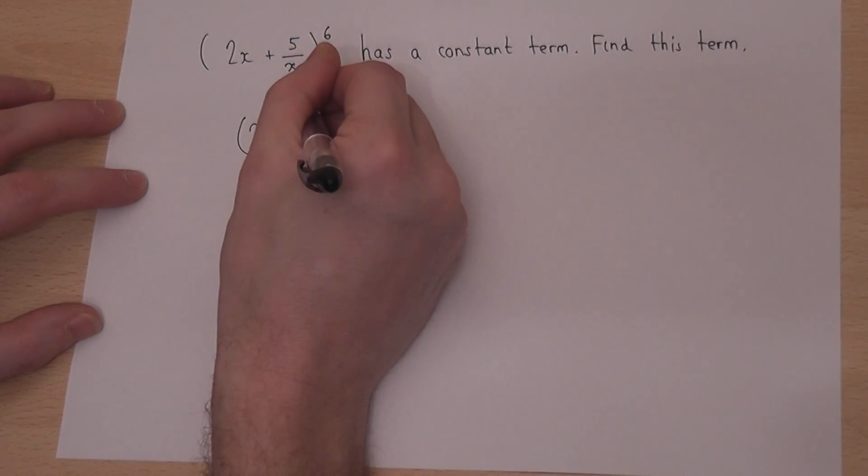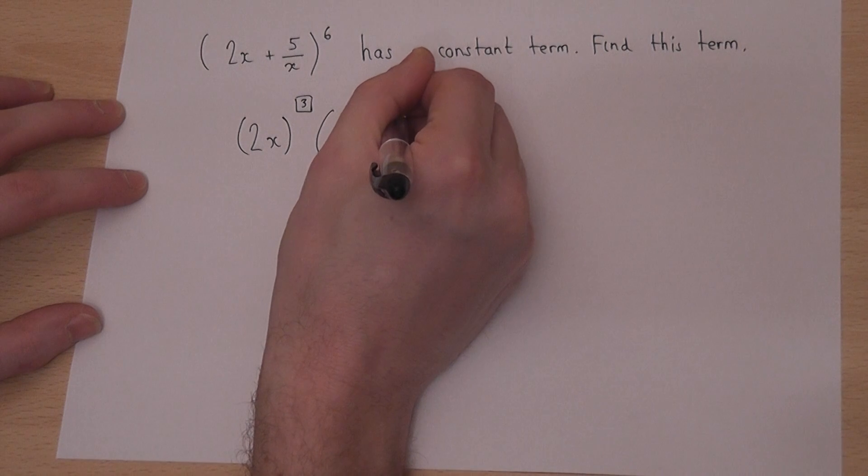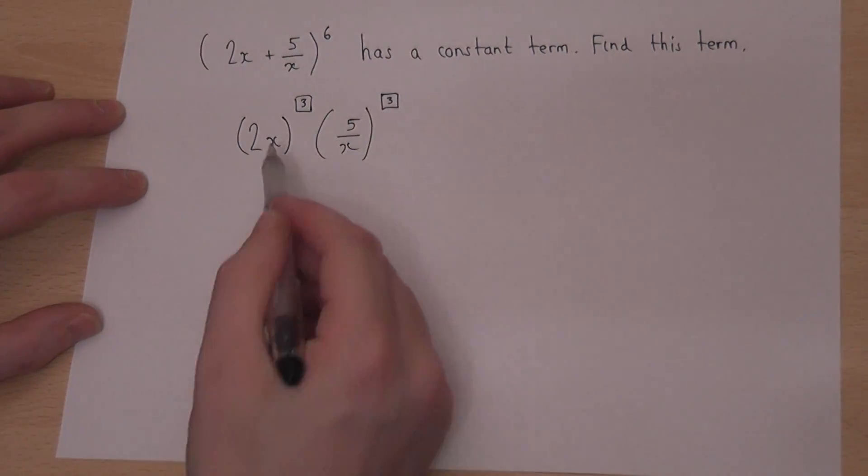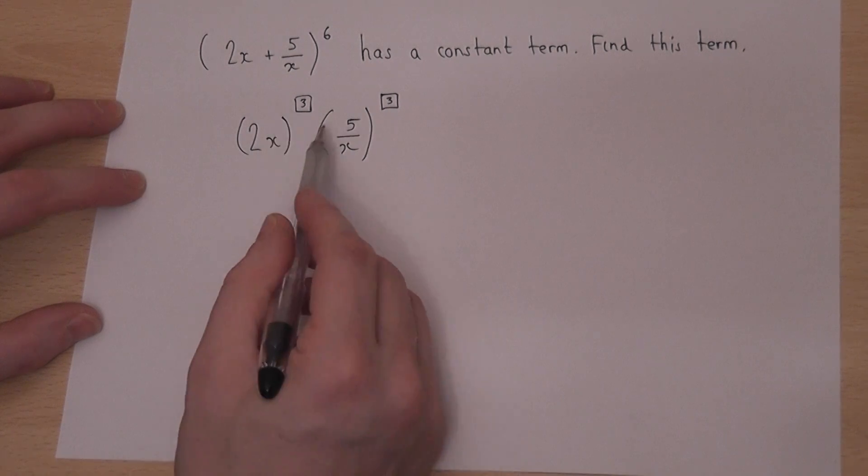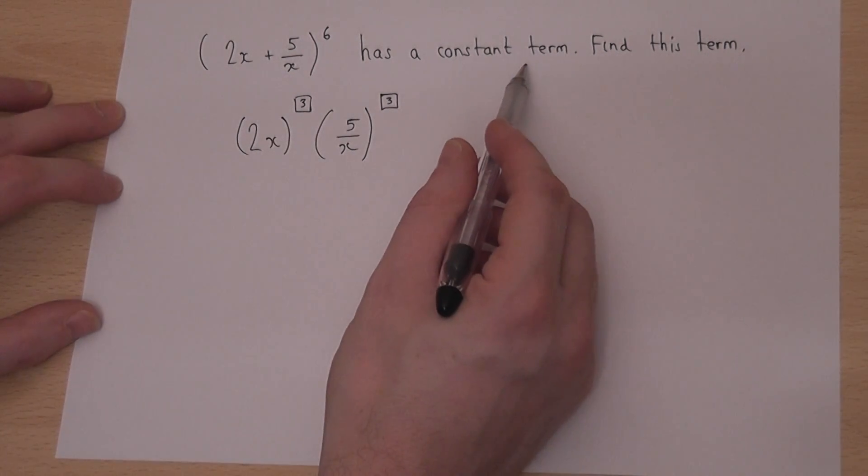Now, if we have a power of 3 and a power of 3, because we'll have an x cubed and an over x cubed, these x's will cancel off and leave a constant term that does not involve x.